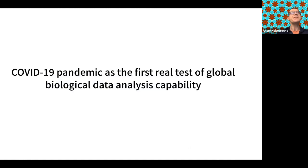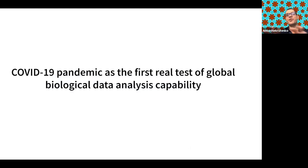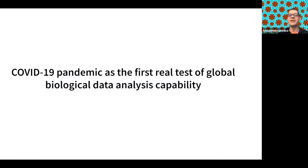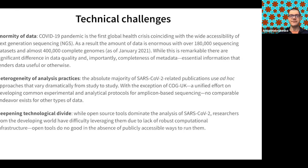SARS-CoV-2 is interesting because it is, with high confidence, probably the most sequenced organism to date. The reason is that this is the first pandemic which really coincides with the proliferation of sequencing technologies. Sequencing is not something only selected centers can do now — it's widespread — and therefore we have just enormous amounts of sequences.